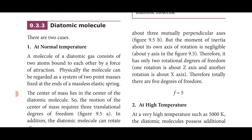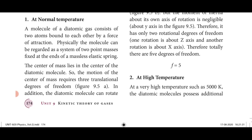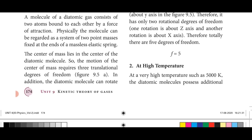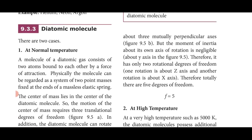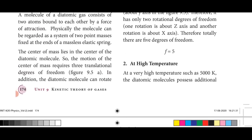A diatomic molecule has two different cases: one for normal temperature and one for higher temperature. At normal temperature, a diatomic molecule has two atoms bound by a force of attraction and can be regarded as two point masses with a massless elastic spring. The center of mass lies at the center. Its motion requires three translational degrees of freedom, and it has two rotational degrees of freedom — giving a total of five.